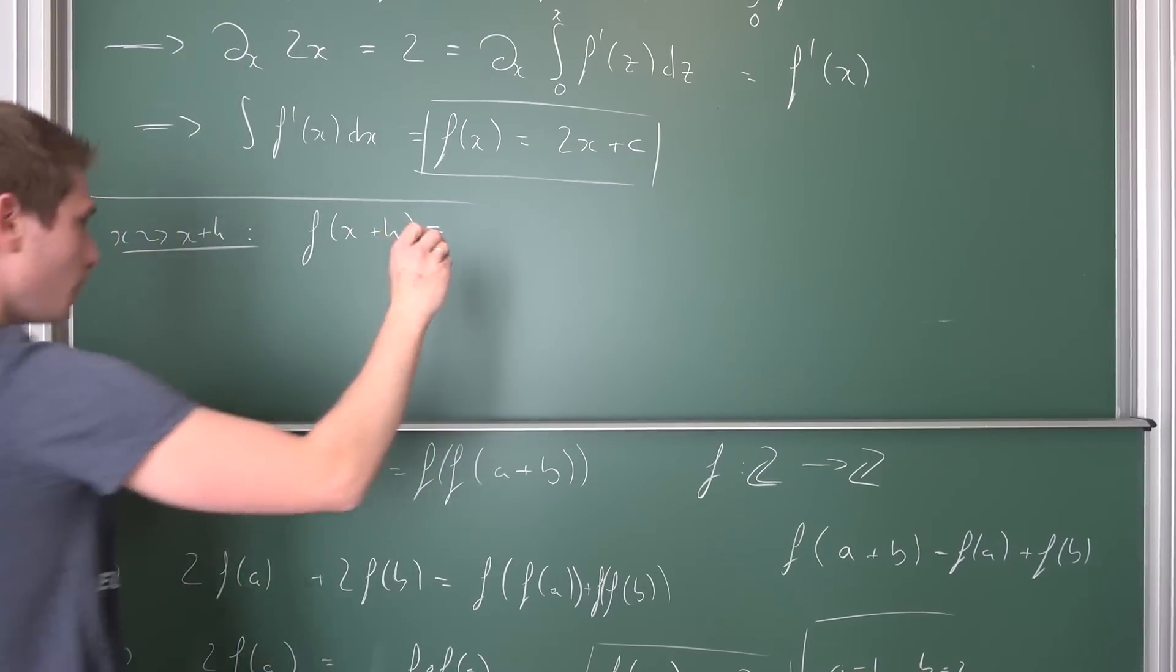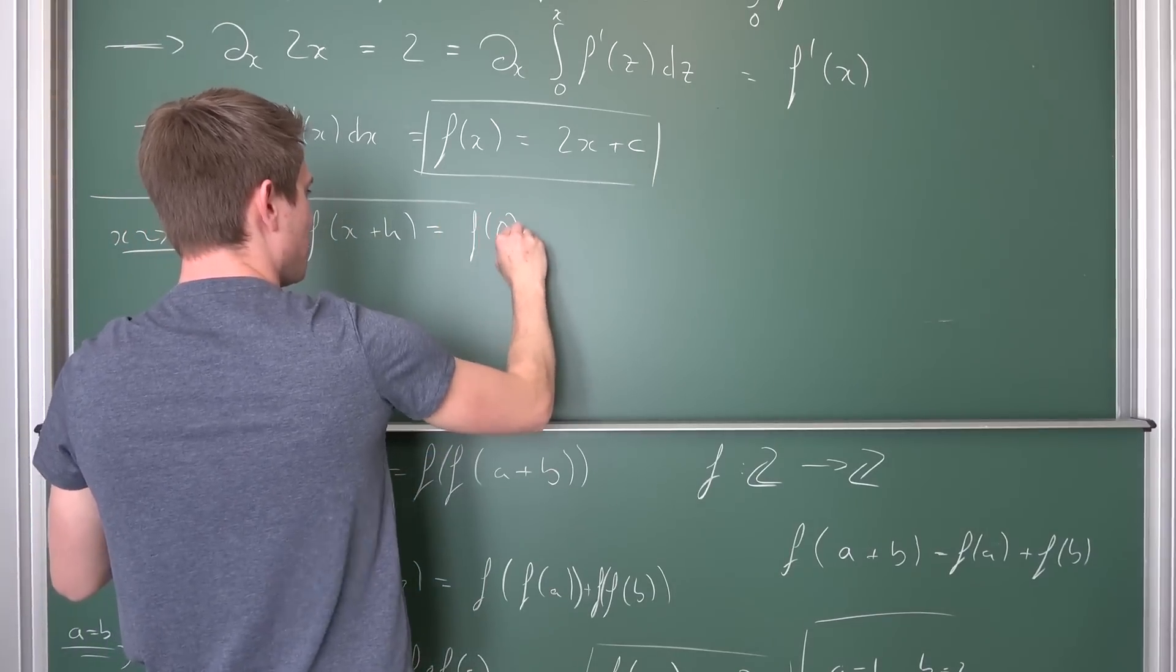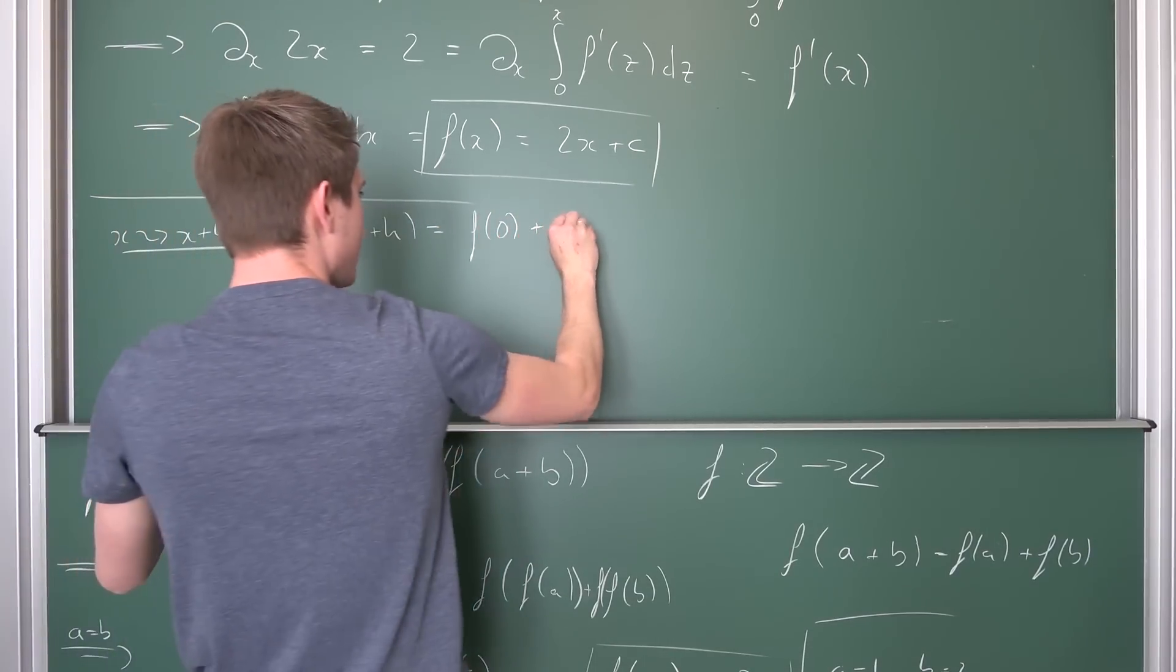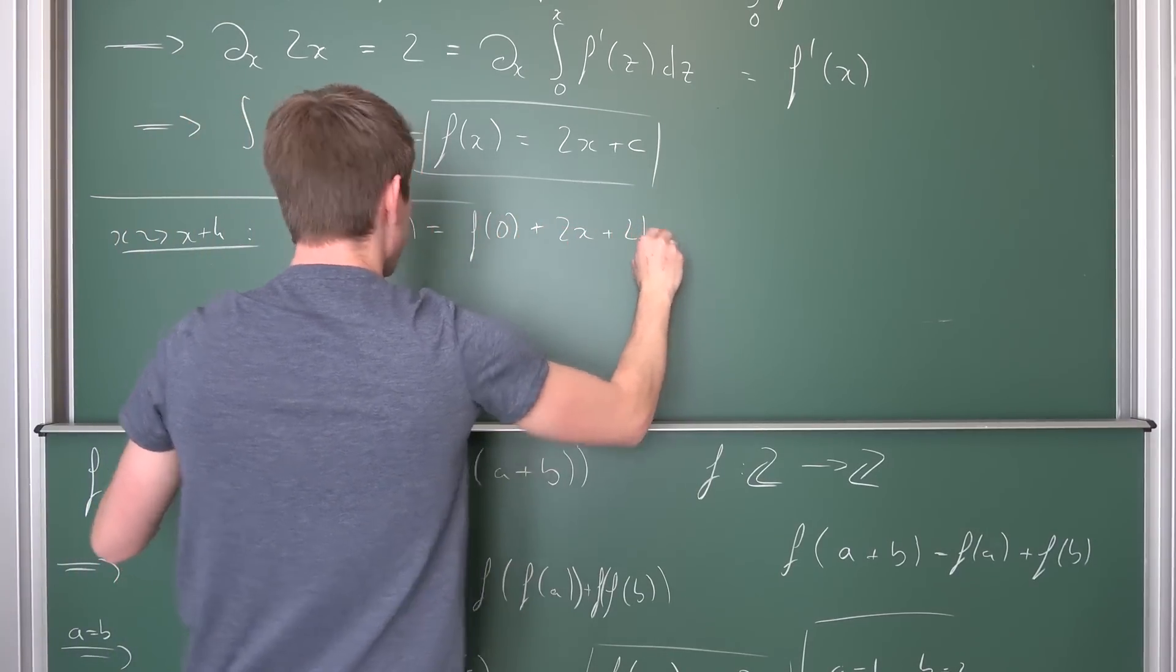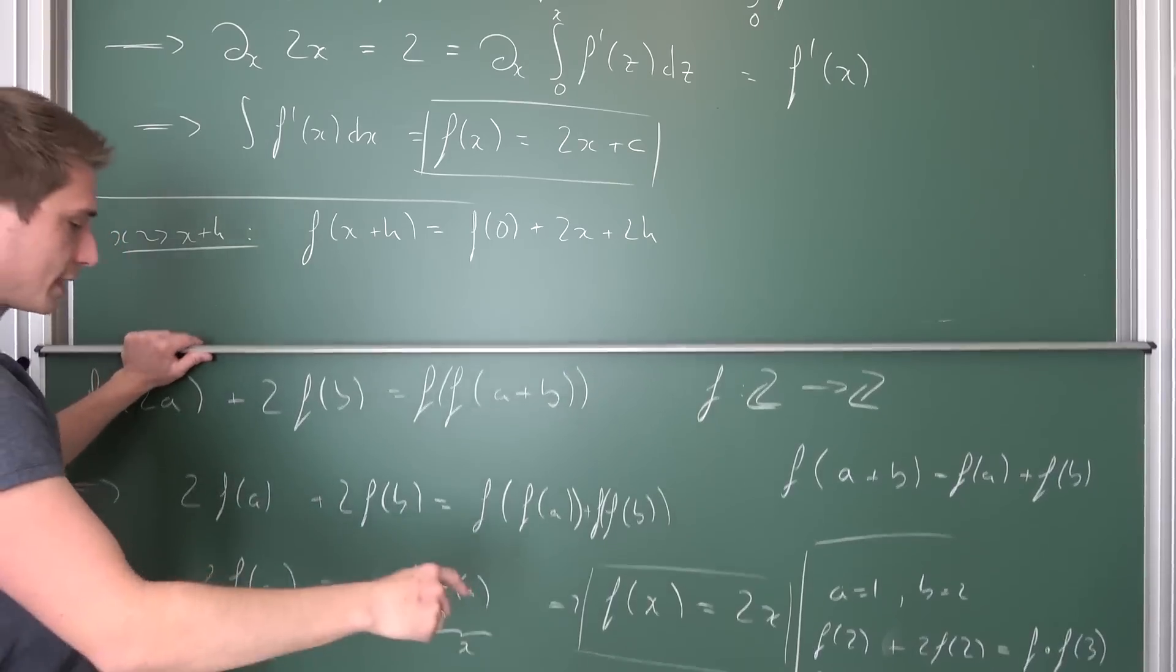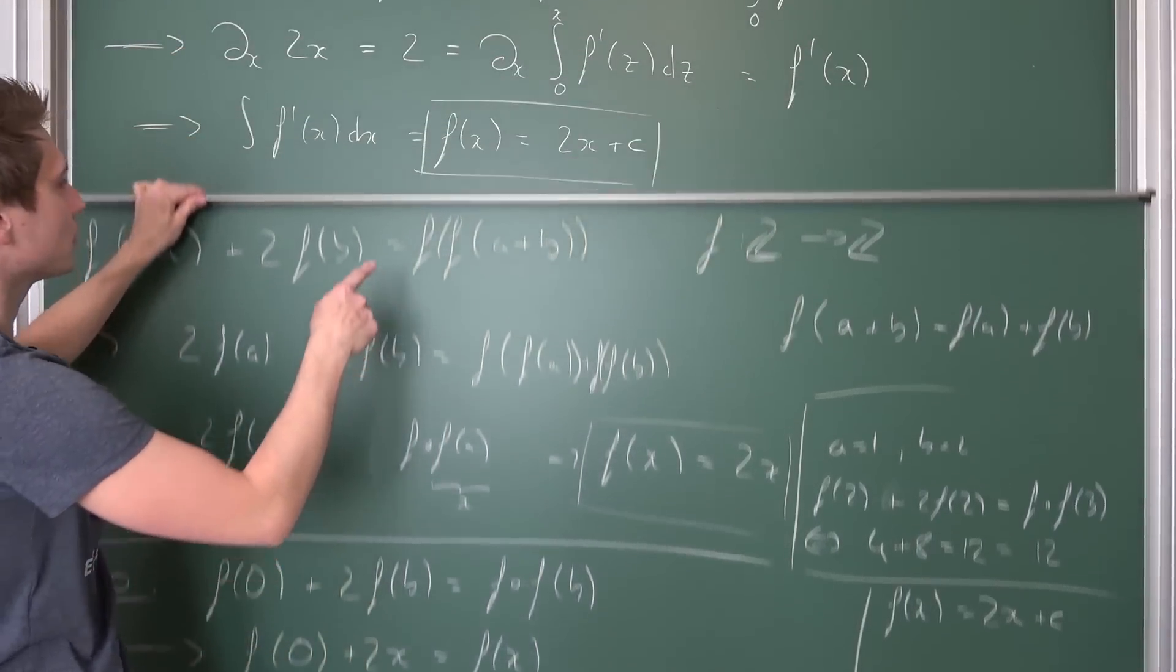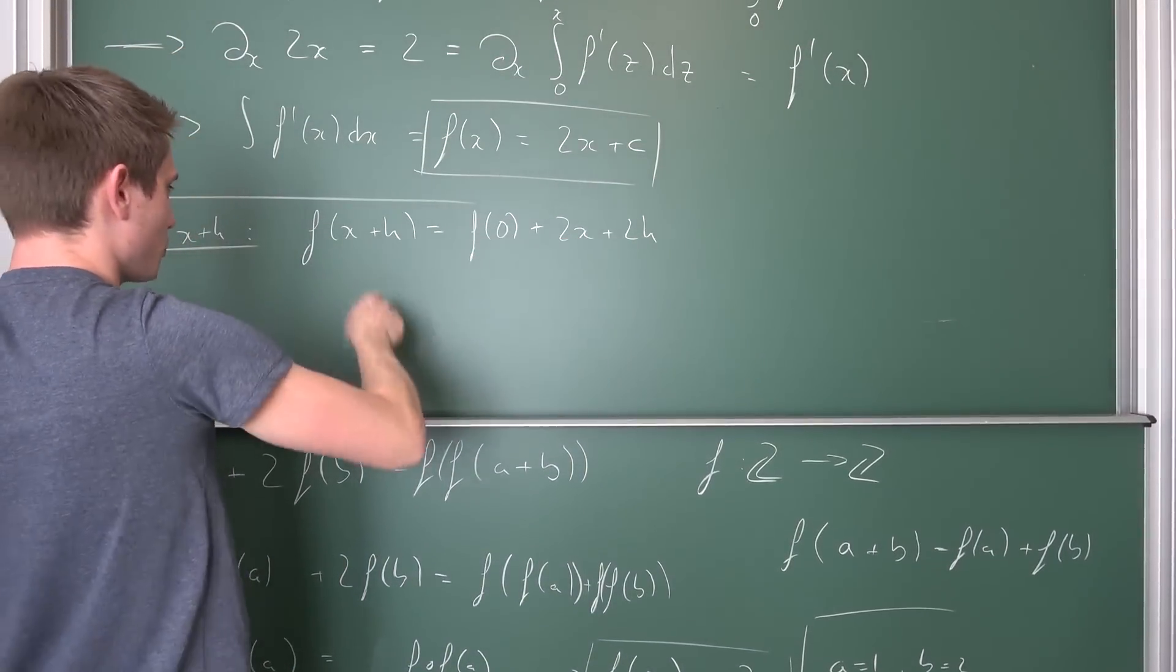I'm going to assume x goes to some x plus h on our equation that we have here. Then f(x+h) is equal to f(0) + 2x + 2h. If we were to subtract this equation from this one...